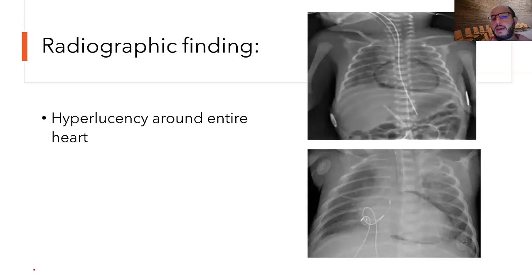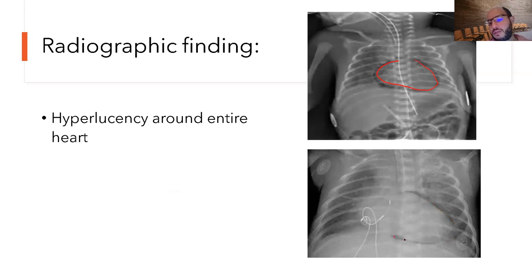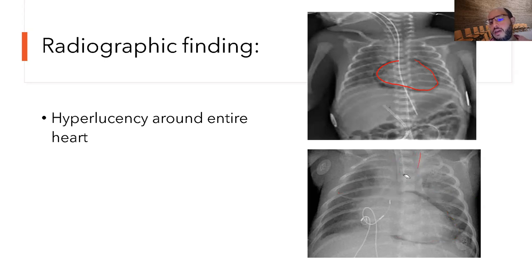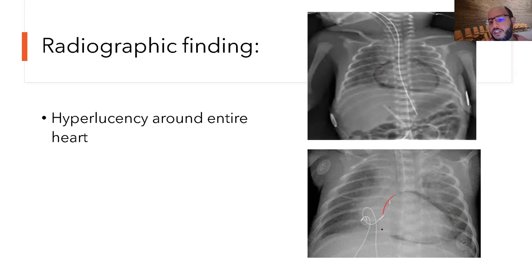On X-ray, you can see air surrounding the entire heart — a continuous ring of air around the heart, distinguishing it from inferior pneumomediastinum which is only on the inferior portion. A second clue is the absence of a clear upper border limit. Third, if you reposition the baby with the affected side up and repeat X-ray, the air in pneumopericardium moves around the heart, whereas in pneumomediastinum it stays in the same position.